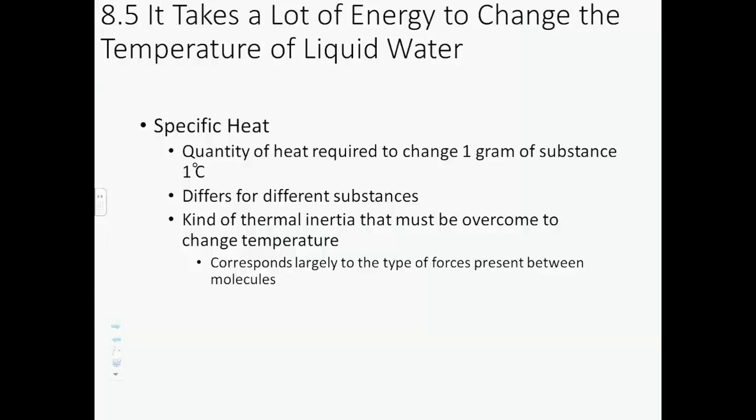Sometimes it takes a lot of energy to change the temperature of a sample, and sometimes it doesn't take any. Specific heat is the way that we can quantify the amount of heat required to change one gram of a substance by one degree Celsius. This specific heat changes for different substances.